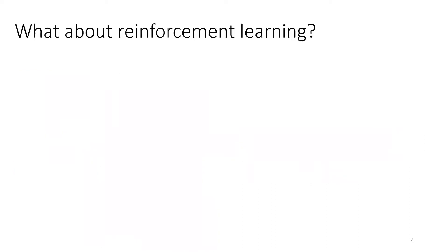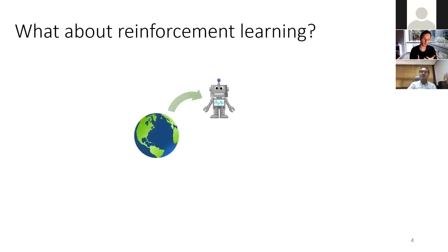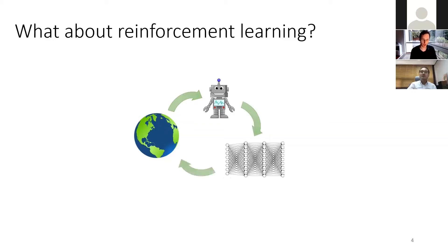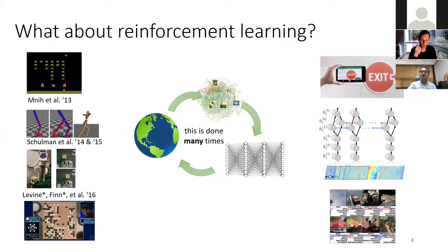Reinforcement learning is the branch of machine learning that deals with decision-making, but in its classic formulation it is a very active learning setting: an agent interacts with the world, collects experience, uses that to improve its policy, then throws out that data and collects more. RL has been successful in playing video games, basic robotic skills, and playing Go — beating the world champion. But these look very different from applications where supervised learning has been successful.